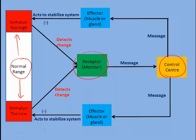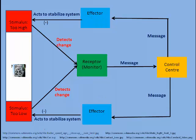The control center is going to act based on that information. If the stimulus is too high, it'll send a message to an effector to try to act to stabilize the system. If the stimulus is too low, the message will go to an effector to try to stabilize the system as well, but perhaps by other means. Let's take a look at a familiar example.